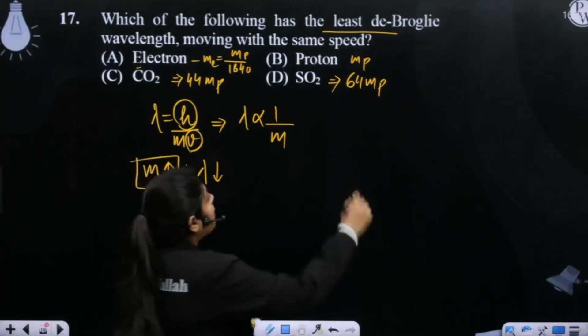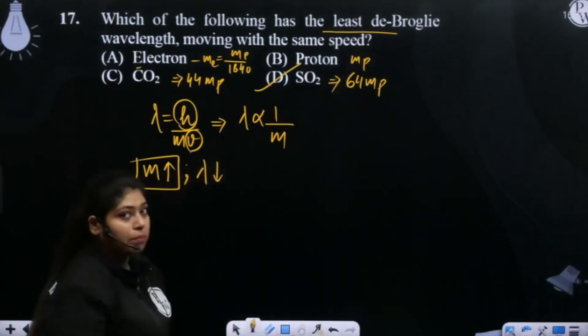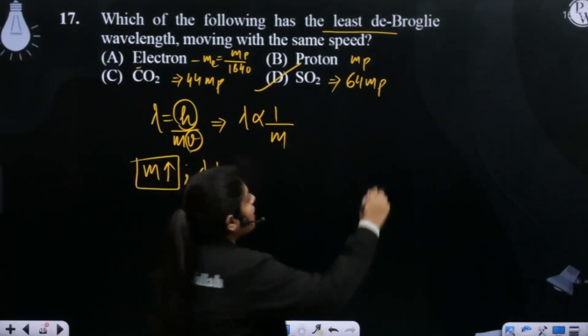So which mass is maximum? SO2. What will the de Broglie wavelength be minimum? Minimum. I hope, this is not a problem in this calculation.